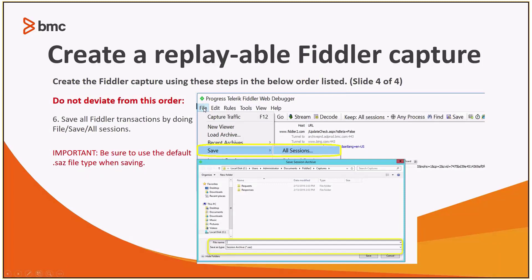You'll go ahead and save it by doing the following: Save All Sessions. Once you select that, a file name dialog will come up. You may want to give it a name such as the issue type and the date, and make sure that you save it as a .saz file. Go ahead and save it somewhere where you can find it and send it to BMC support on your case.